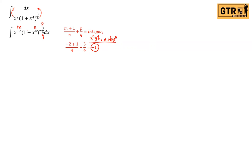So we use the substitution x to the n times z to the q equals a plus b times x to the n. With n = 4 and q = 4, the substitution becomes x to the 4th times z to the 4th equals 1 plus x to the 4th.